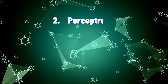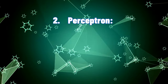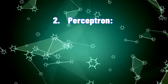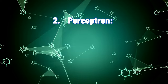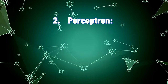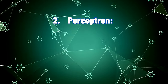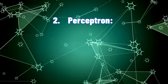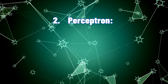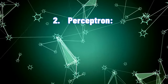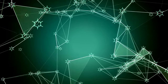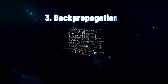2. Perceptron: In 1958, Frank Rosenblatt introduced the Perceptron, a single-layer neural network that was capable of learning simple patterns. The Perceptron used an algorithm to adjust the weights of its connections between neurons to minimize error.